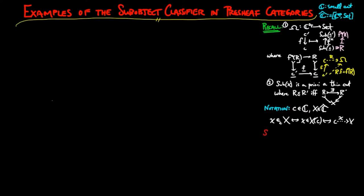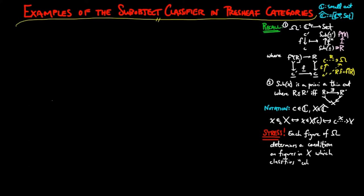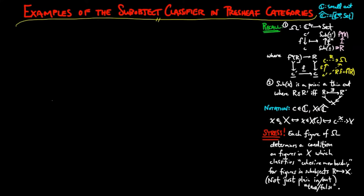We want to stress the following point: each figure in the sub-object classifier Ω determines a condition on figures of each container X which classifies cohesive membership for figures in sub-objects of X, and not just a condition of either being a figure in R or not a figure in R. In the case of the category of sets, however, there is no cohesivity between its figures.